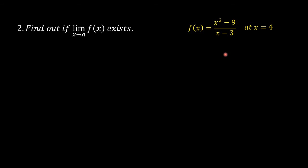Second step: find out if the limit of f(x) as x approaches a exists. Since a = 4, find out if the limit of f(x) as x approaches 4 exists. Solve for the limit of f(x) as x approaches 4 from the left, and then solve for the limit of f(x) as x approaches 4 from the right.